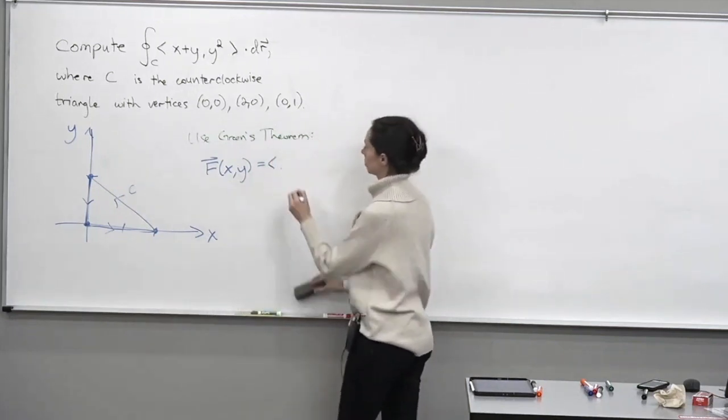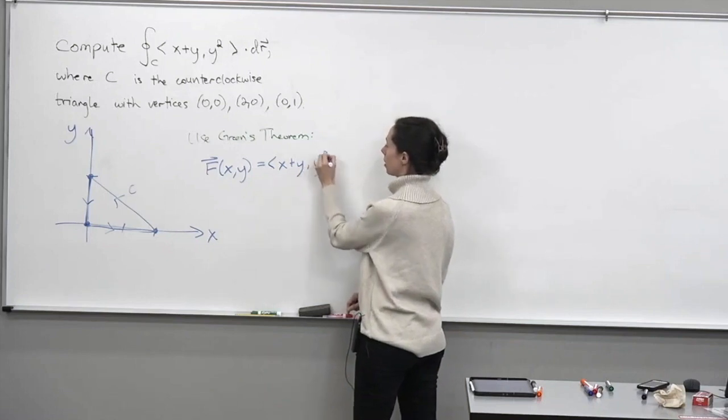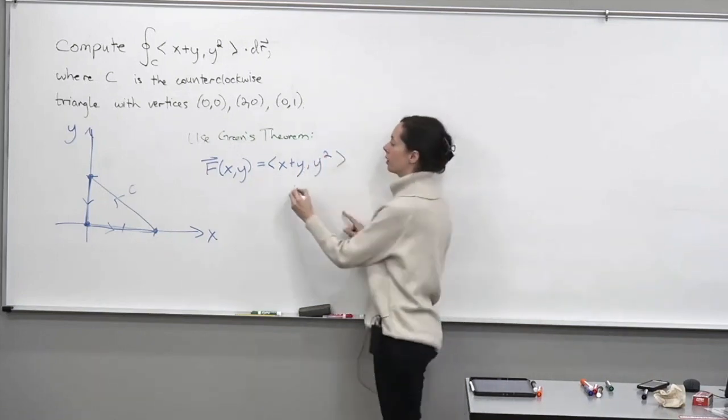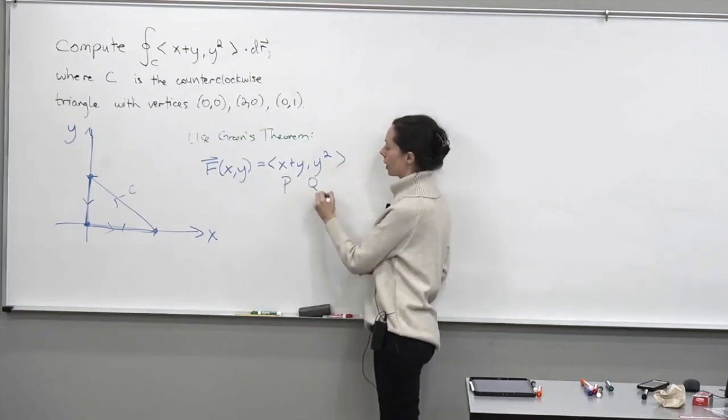But our vector field F is F(x,y) equals x plus y, comma, y squared. In the language of Green's theorem, I often think of this first coordinate as the coordinate function P, and the second one is Q.